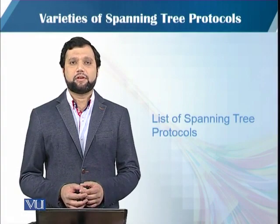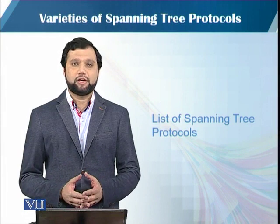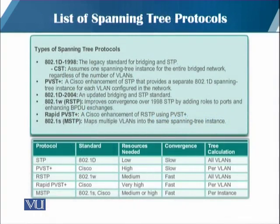Now we will look into the list of spanning tree protocols that exist in the networking community nowadays. There are many varieties of spanning tree protocols that emerged after the original IEEE 802.1D spanning tree protocol specification. The first one was the original IEEE 802.1D, which is the legacy standard for bridging and spanning tree protocol. The main assumption was that only one spanning tree instance exists for the entire bridged network, regardless of the number of VLANs. Then Cisco introduced its proprietary enhancement called PVST Plus.